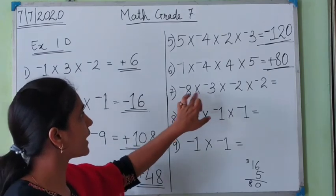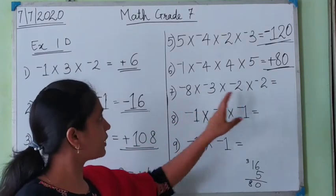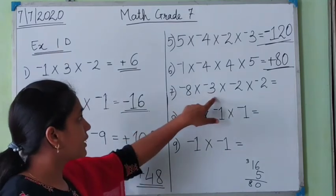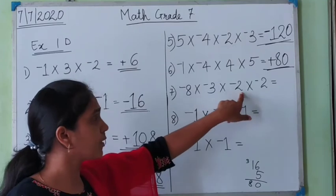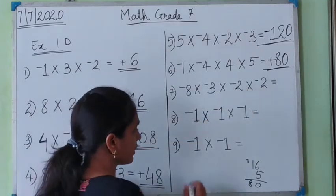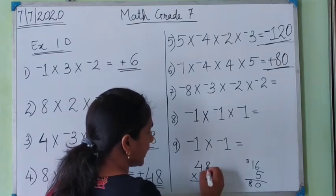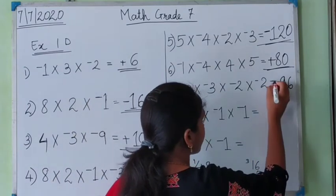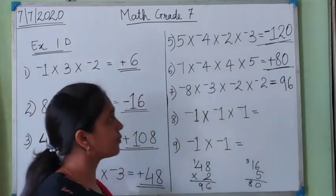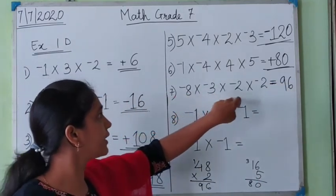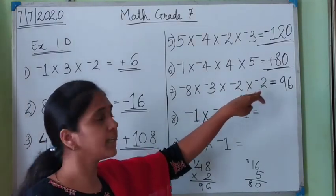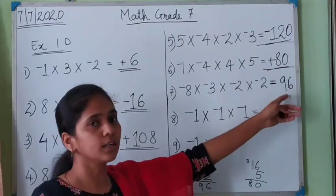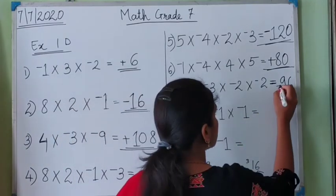In the seventh example, all four numbers are negative. First multiply: 8 into 3 is 24, 24 into 2 is 48, and 48 into 2 is 96. So the answer is 96. How many negative numbers are there? There are 4 negative numbers. Four is an even number, so if there is an even number of negative numbers, the sign of the answer will be positive. The answer is positive 96.